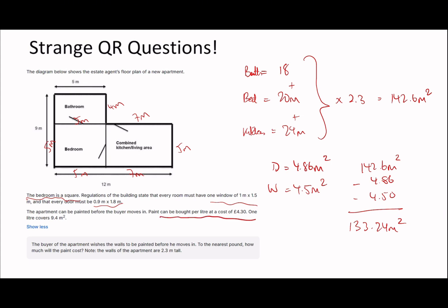And then it tells us paint can be bought per liter at cost of 4.30. One liter covers 9.4 meters. So if you divide this by 9.4, you figure out how many liters you need, which is 14.17. And then if you multiply this, so this is a weird one, I guess, because I'm not sure if you can buy it. It says per liter, but does that mean you have to only buy it in liters? What you'd essentially have to do here is either go with 15 liters or just multiply this number by 4 pound 30. So I guess here, if I just multiplied it by 4 pound 30, I'll end up with 60 pound 95. And it does say to the nearest pound how much will it cost, so 61 pound, I guess.